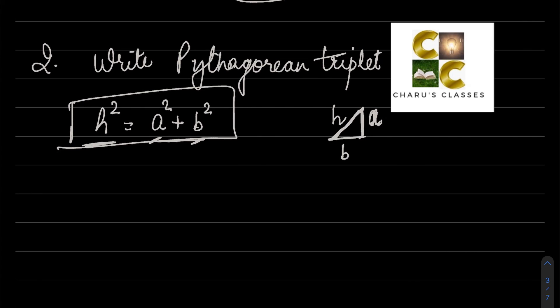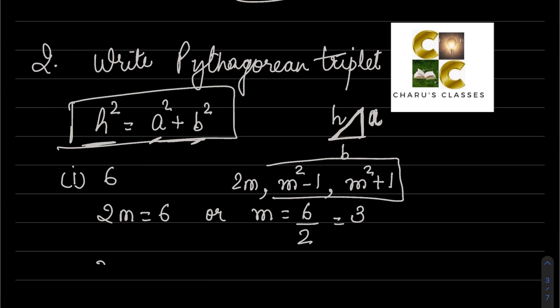Here we don't need to write anything about the Pythagorean theorem. They are asking to write the Pythagorean triplet whose one member is 6. Pythagorean triplets are three numbers. You have to remember them: they are 2m, m squared minus 1, and m squared plus 1. In this question, where one Pythagorean triplet is given, we assume that 2m equals 6. So 2m equals 6.